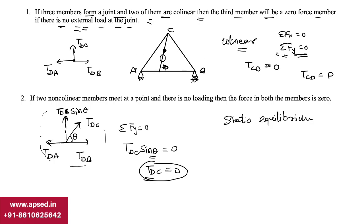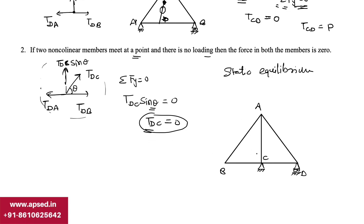The second rule says: if two non-collinear members meet at a point and there is no loading at that point, then the force in both members is zero. We can understand this with an example — consider a truss joint B where two non-collinear members meet. Since they are not in the same line and there is no load, the force in both members is zero.